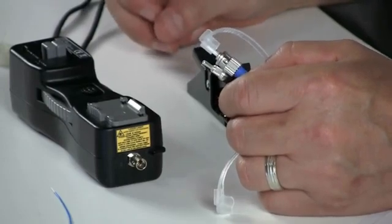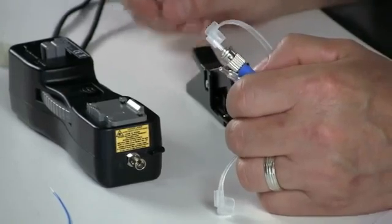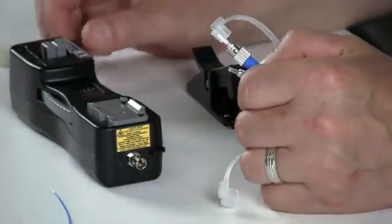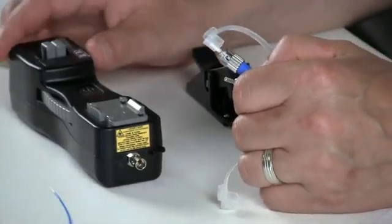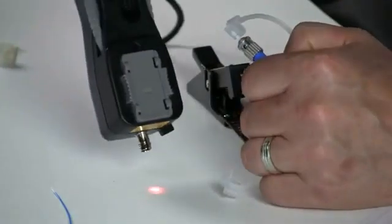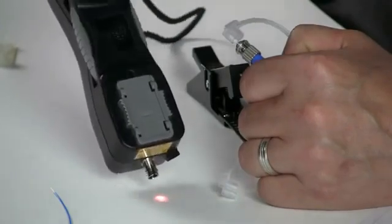Today we're going to talk about OptiCam terminations. The first part of every OptiCam termination is to ensure that your equipment is in working condition. In order to check the OptiCam to ensure that the battery strength is good, click the on button, focus it on the table and ensure that the light is very bright.